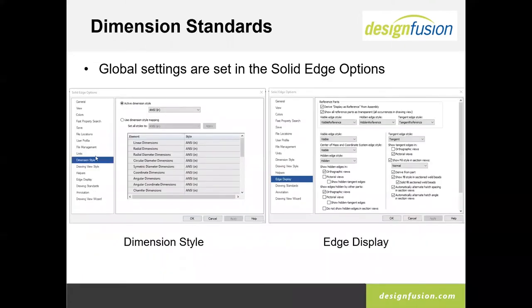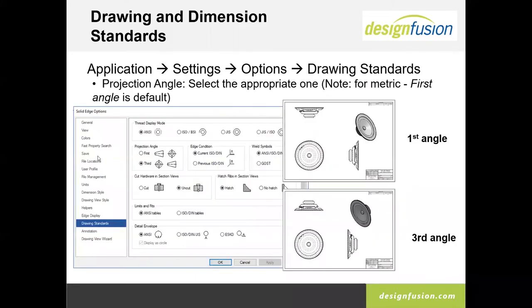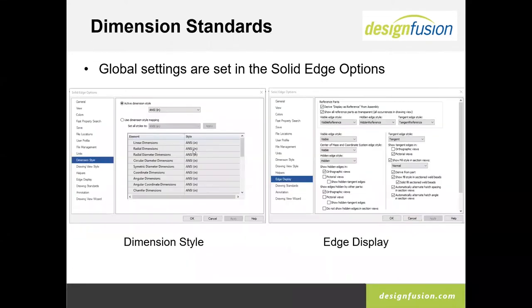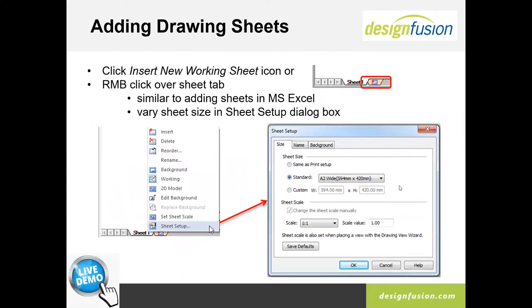The global settings can start here. You can also lock down dimension styles and edge displays. If you're already working for a company that has Solid Edge and you're new to it, they probably have this already set up for you. To create a new sheet, you can click to add a new sheet and then do a sheet setup. Let's have a quick look at this.